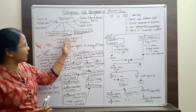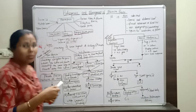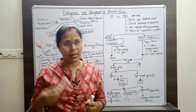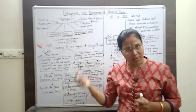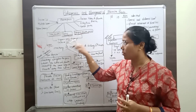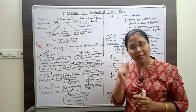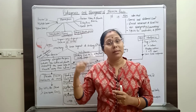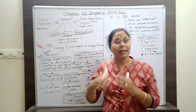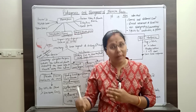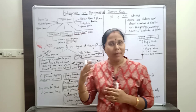According to position, placenta previa is named as total, partial, and marginal. It is diagnosed in the antenatal period. Mothers who go for antenatal check-up around 18 to 20 weeks — on transabdominal ultrasonography we can determine the placenta's position. Importantly, those mothers detected with placenta previa at 18 to 20 weeks may find that the placenta position changes by the third trimester. This is called migration of the placenta.